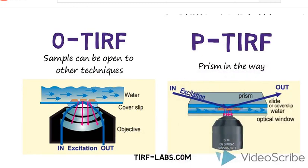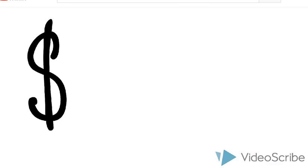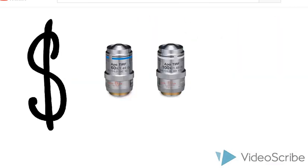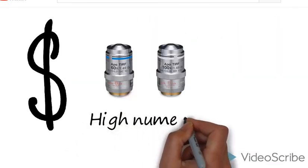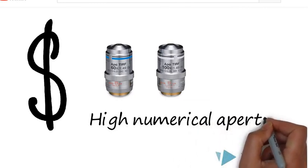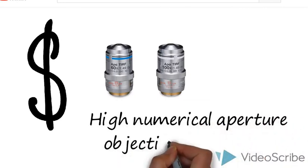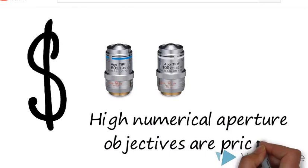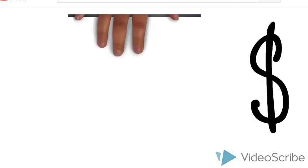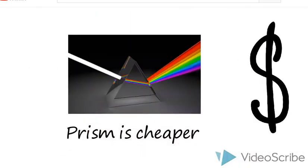When it comes to money, P-TIRF is by far the financially friendly option. To get a high numerical aperture objective lens capable of pulling off TIRF, you must be willing to spend a couple thousand dollars on the objective alone. P-TIRF does not require such expensive lens because the critical angle is achieved with a prism.